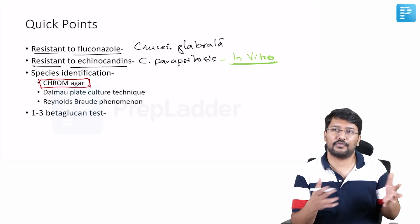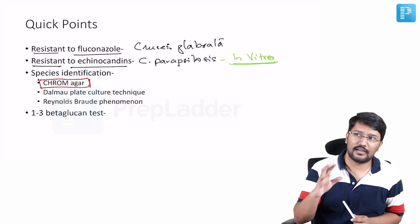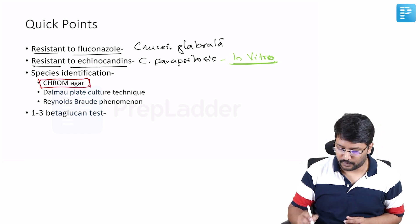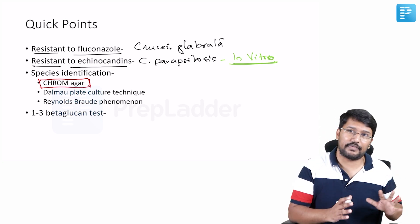So in chrome agar, it is an agar plate technique of culturing where depending on the species, the chrome agar develops new colors. So based on the colors that these colonies render to the culture media, we can identify the species.